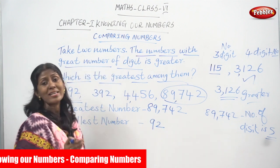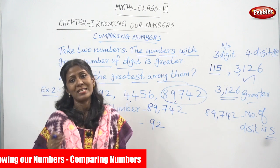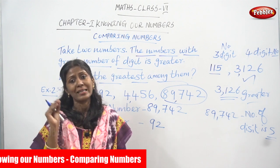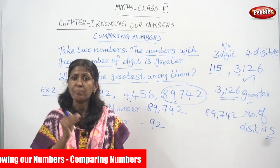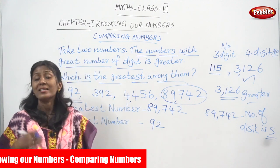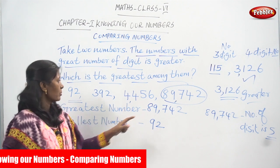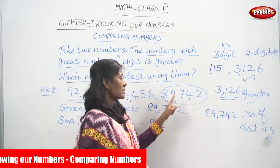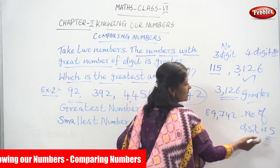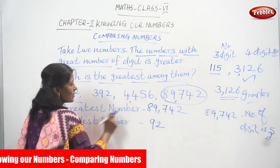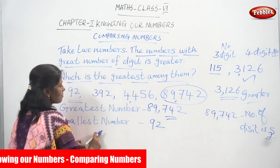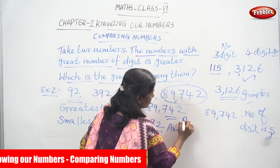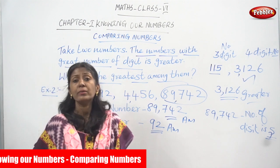We have to consider only the number of digits. If the number of digits are the same, then you go to the place value. Greatest number means the number with the greater number of digits — that is 89,742. Smallest number means the number with fewest digits — that is 92, with only two digits. I hope you understand comparing numbers clearly.